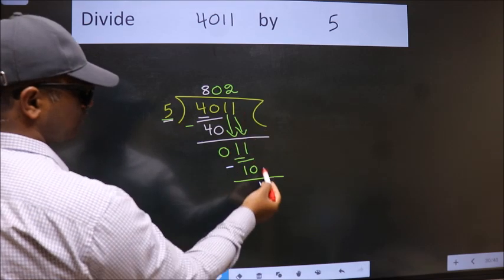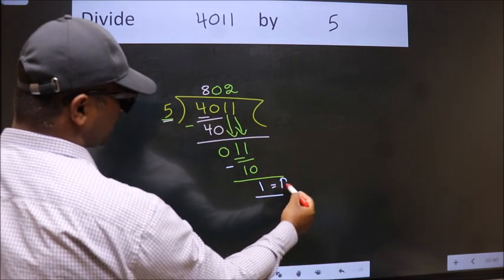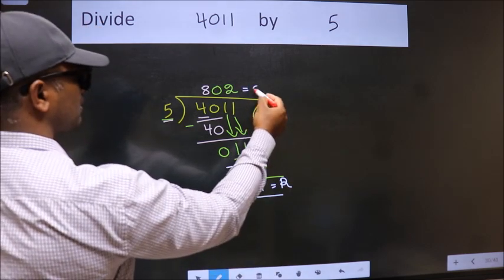No more numbers to bring it down, so we stop here. This is our remainder. This is our quotient.